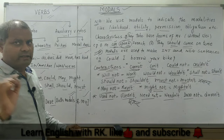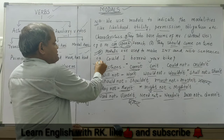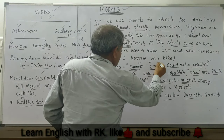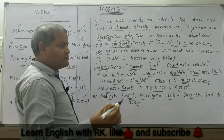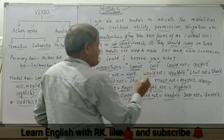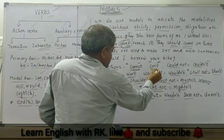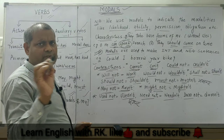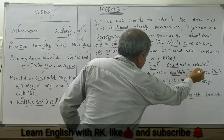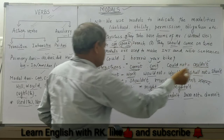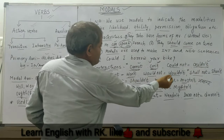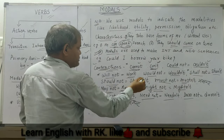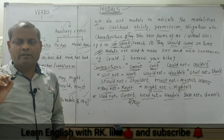One more thing I wish to add here. While using contractions, you can follow either the American version or the British version. In the American version, the T in contractions is not pronounced; in the British version, the T is pronounced. For example: American — 'Can't' (no T); British — 'Can't' (with T). Similarly, 'couldn't' in American drops the T; British version — 'couldn't' with T.